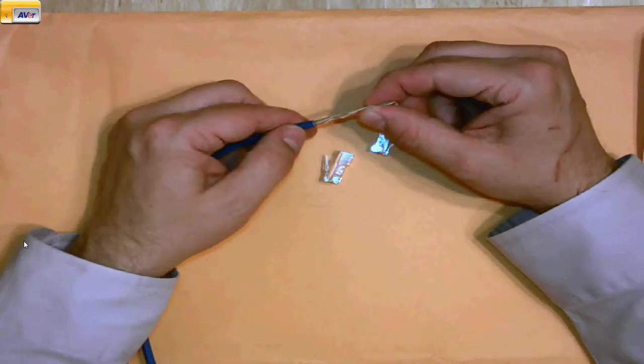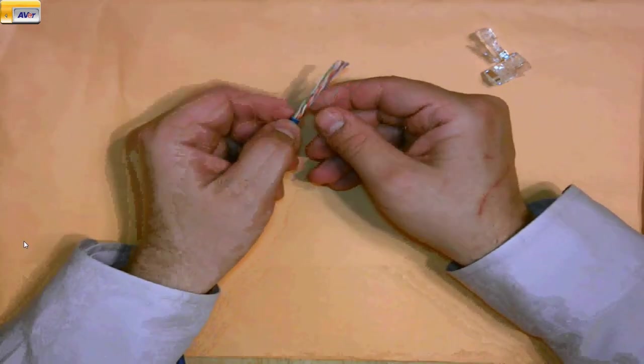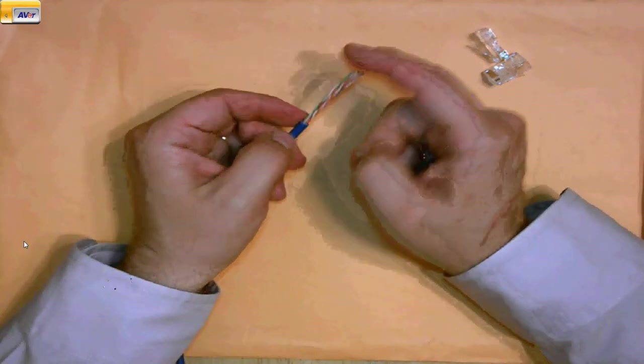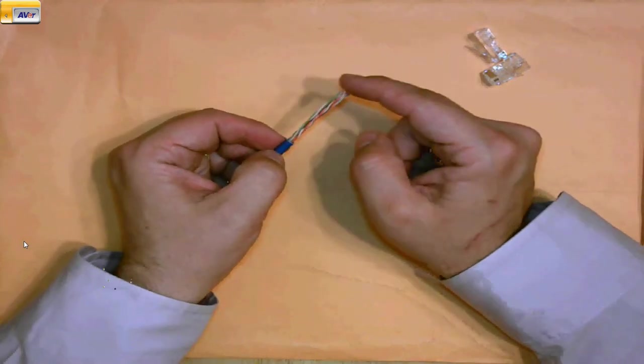And here I have my wires. This is called unshielded twisted pair. It's the most common type of wire used with Ethernet installations. It's twisted pairs. There's no metal shielding on it like you might see on a coaxial cable or on a shielded cable.